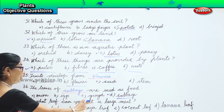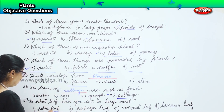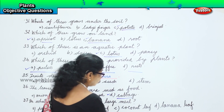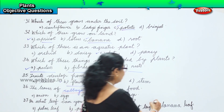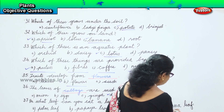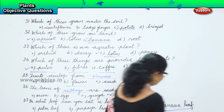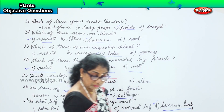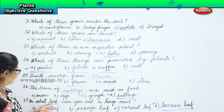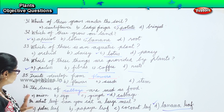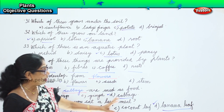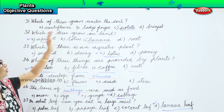On what leaf can you eat a large meal? Not a palm leaf, not a papaya leaf, not a coconut leaf. The answer is option D — banana leaf. Banana leaf is long and nice, and it is also medicinal. So on what leaf can you eat a large meal? Banana leaf.